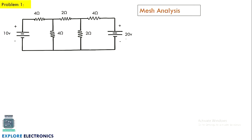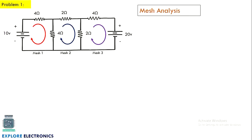A mesh is a complete closed circuit where no other branch is present inside it. We treat this circuit as mesh 1, mesh 2, and mesh 3. We need to apply KVL to each mesh to get three expressions, and by solving those we get the current in each mesh. We assume current directions — either all clockwise or all anti-clockwise — consistently in all meshes. The mesh currents are I1, I2, and I3.